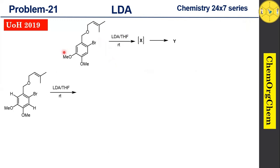The first step involves LDA, which we have already discussed in previous videos. If you missed that, you can find the link in the description box. LDA, or lithium diisopropylamide, is a non-nucleophilic, sterically hindered strong base that readily abstracts protons from acidic positions in molecules. LDA is useful for generating enolate ions and can also abstract protons from benzylic positions and acidic protons on aromatic rings.